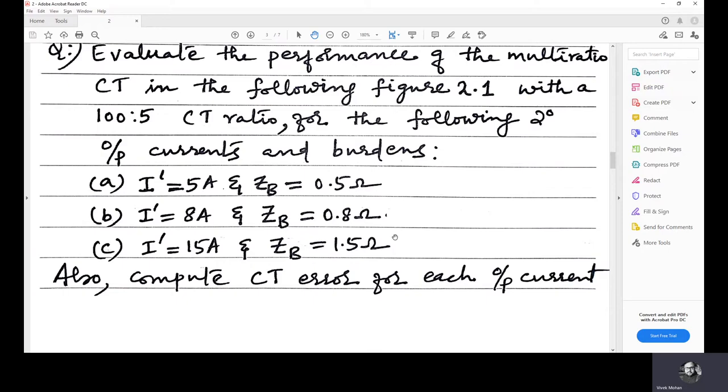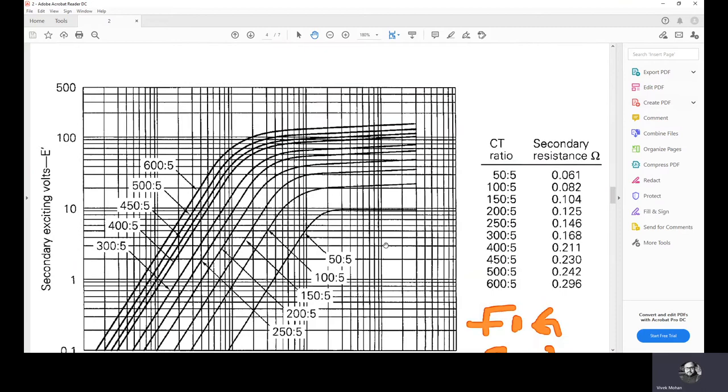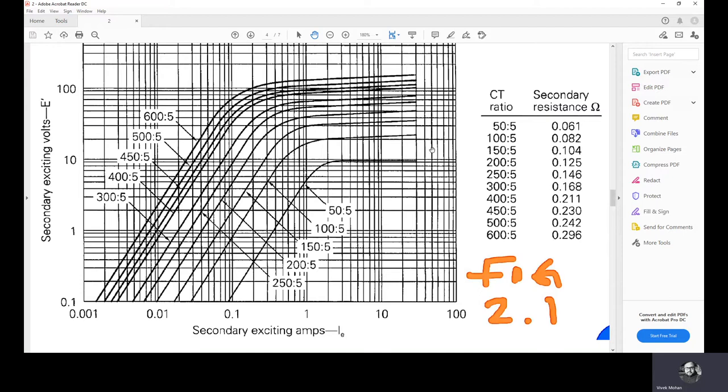Let's see the solution. Now, figure 2.1 as I already told you in the last lecture, it is the excitation plots taken from the Westinghouse relay manual. So, for different CTs with different current ratios, we have secondary exciting volts versus secondary exciting amps. So, if we know E dash, the corresponding IE value or the excitation current value could be found out from this particular plot.